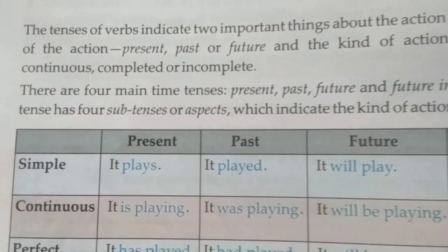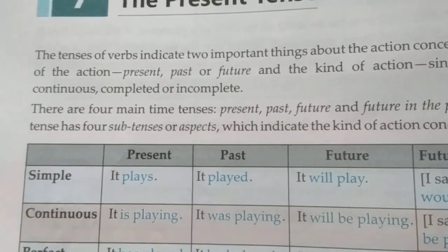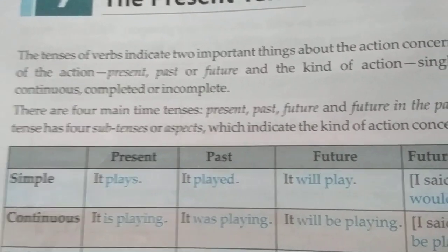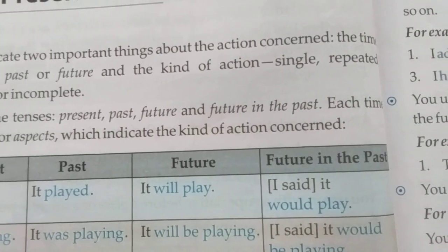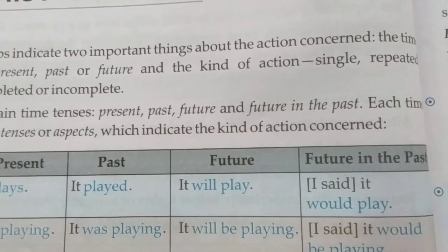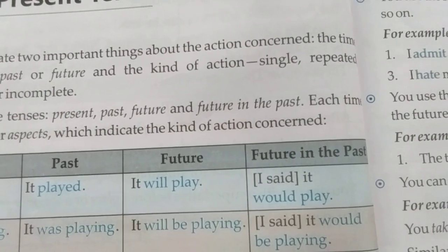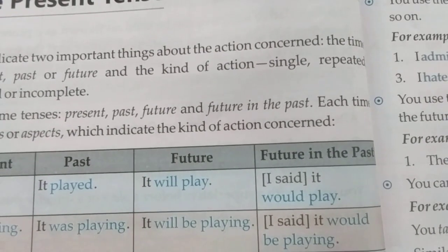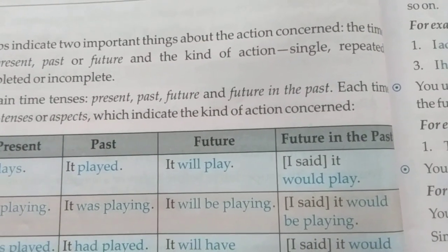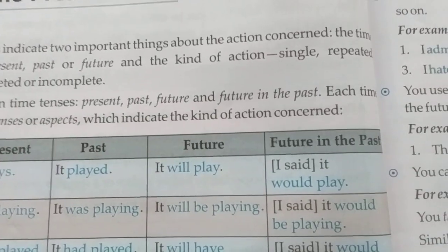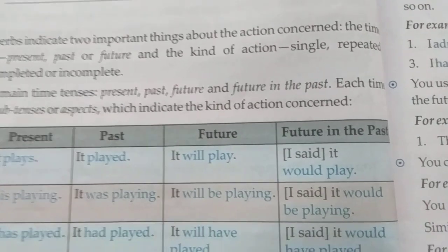There are four main types of tenses: present tense, past tense, future tense, and future in the past. Your tense is three types — present, past, and future — but in this book, there is also a future in the past tense.